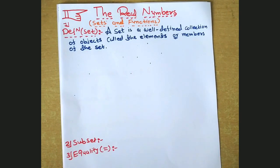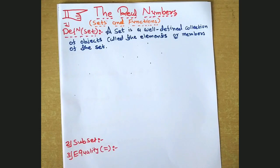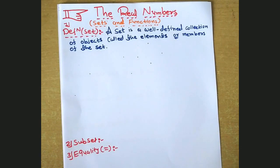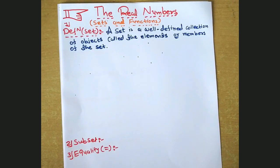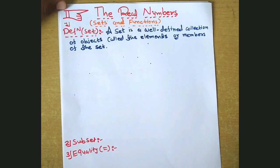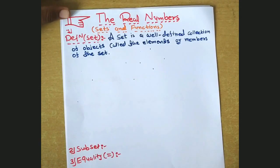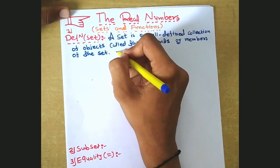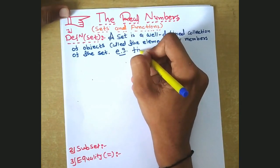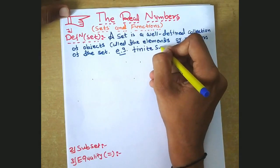Hello friends, today I am talking about the basics of real numbers, and this basics is so important for real analysis. It's about sets and functions. First of all, the definition of a set: a set is a well-defined collection of objects called the elements or members of the set.